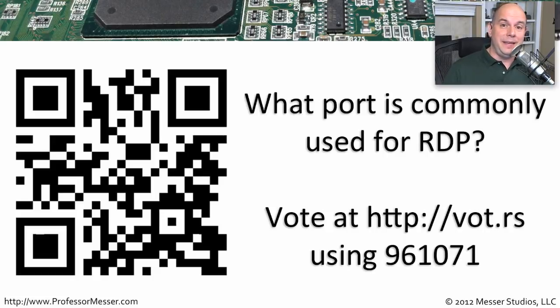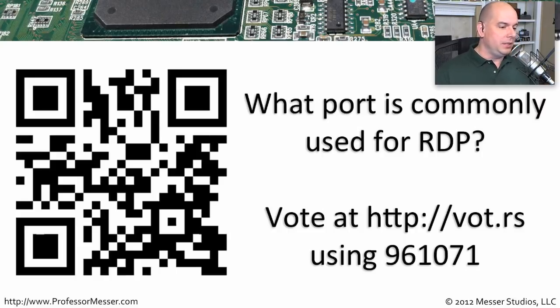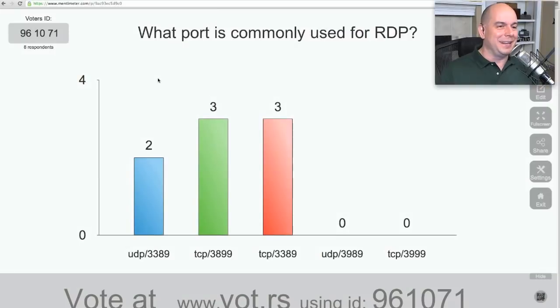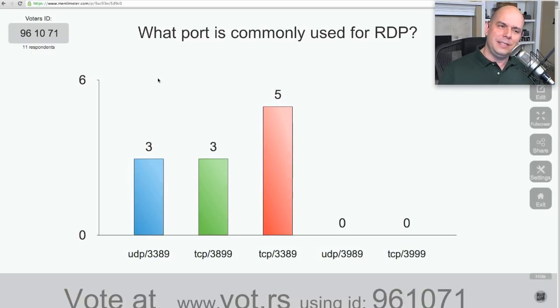Do not answer in the chat room — answer online by going to vote.rs, VOT.rs, at number 961071. Your options are: UDP 3389, TCP 3899, TCP 3389, UDP 3989, or TCP 3999. Notice I made these very close to each other, so you really have to know to get this right. This is very common to the types of answers you'll get on the A Plus certification exam.